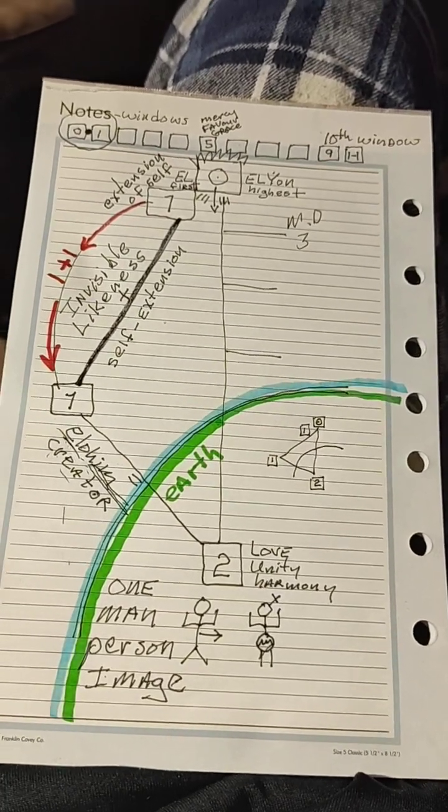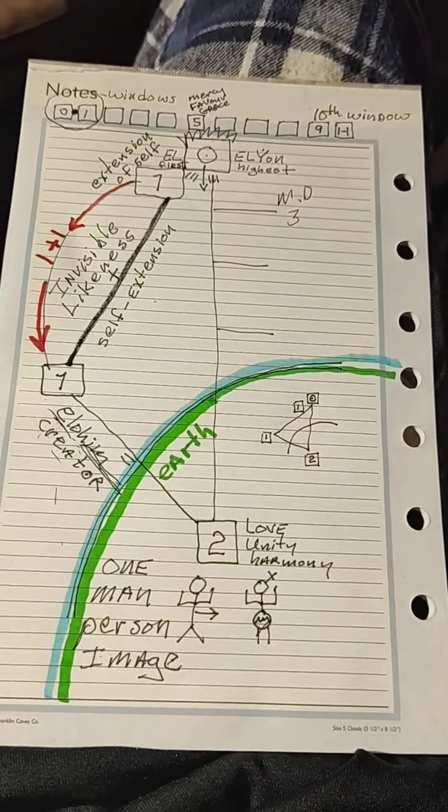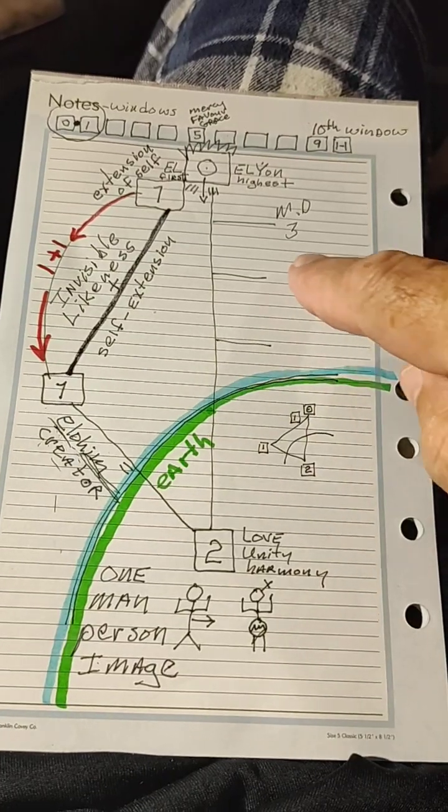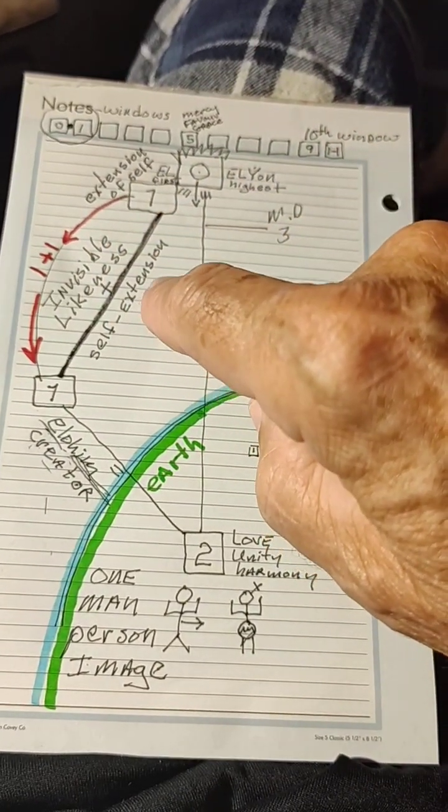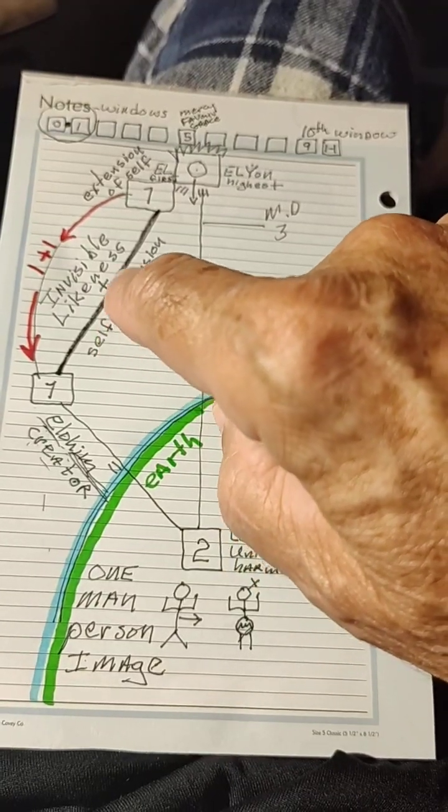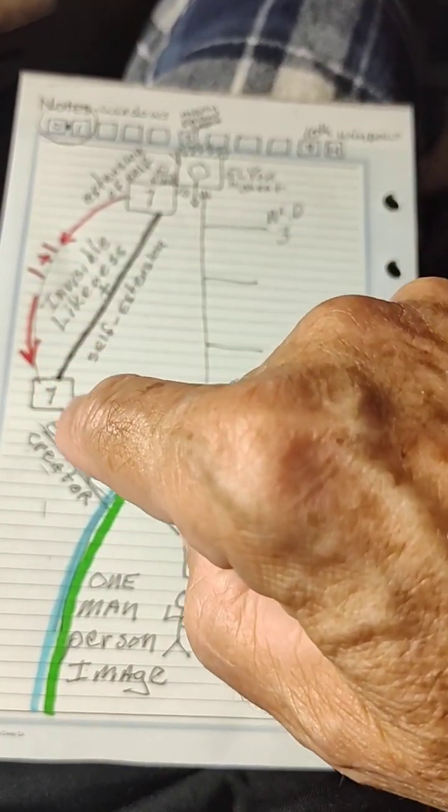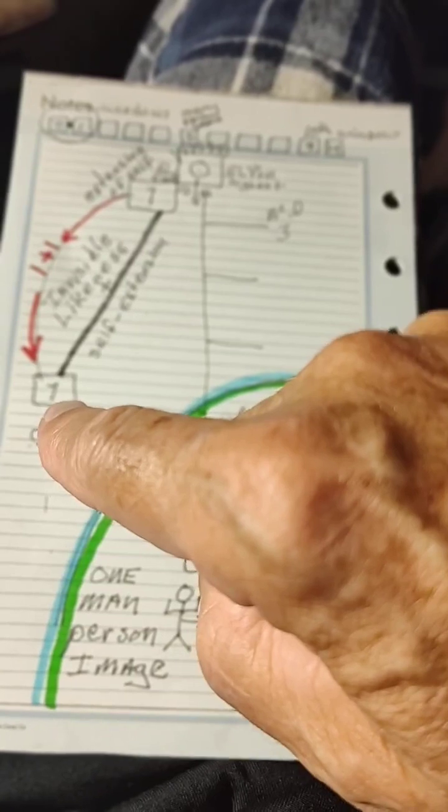Part 2. One extension of self is still one in the same.